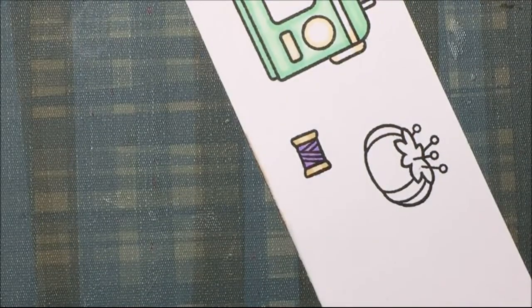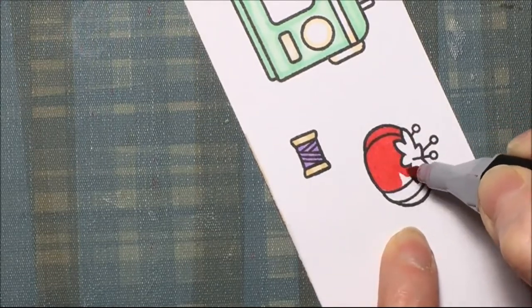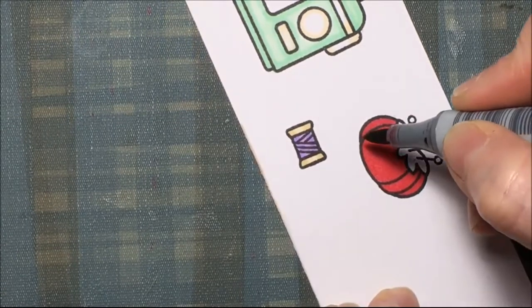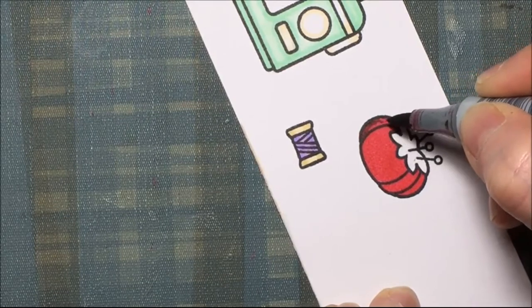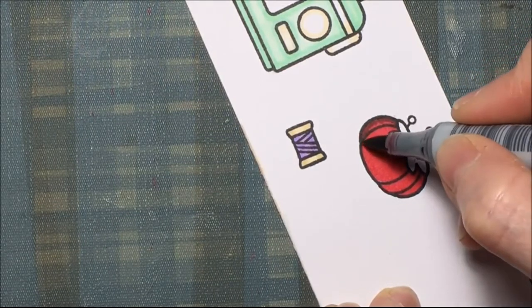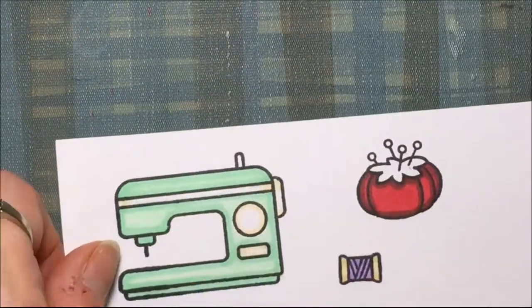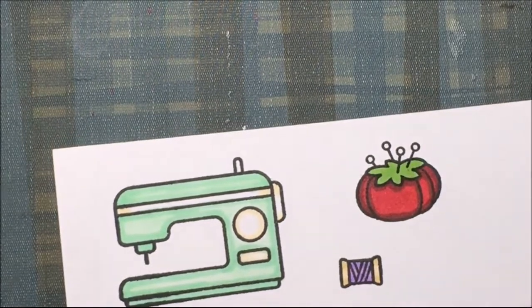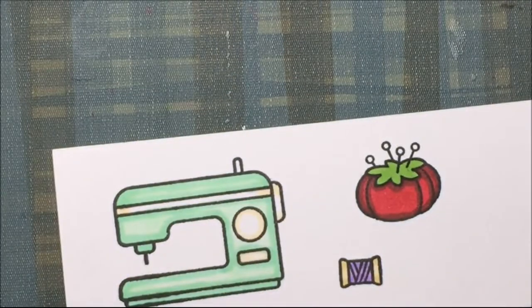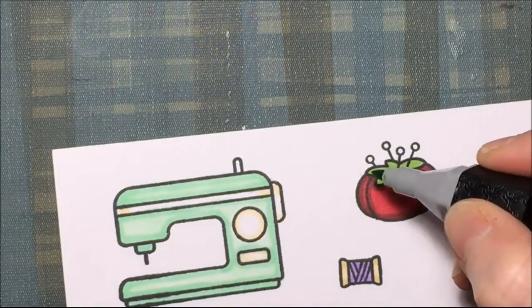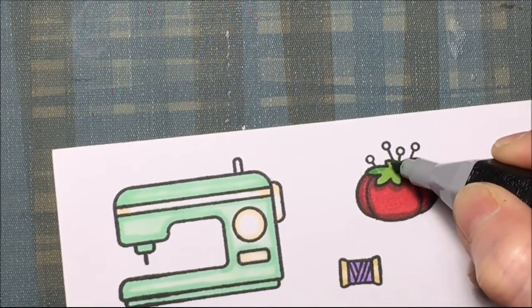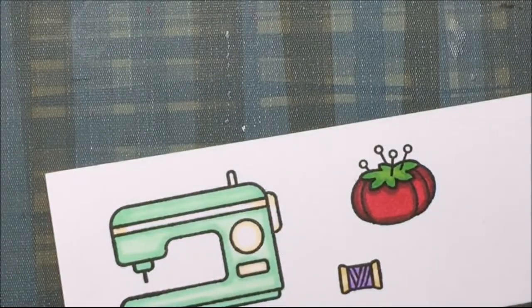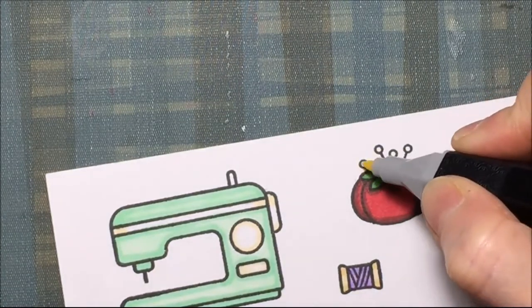CR11 for the pin cushion. That is R59, a Copic marker, and I'm just going to outline the pin cushion with that darker Copic red color. LG3 for the top of that tomato pin cushion, LG5 to define the edges around the lighter green. LY2 for the tips of the pins, the tops of the pins.